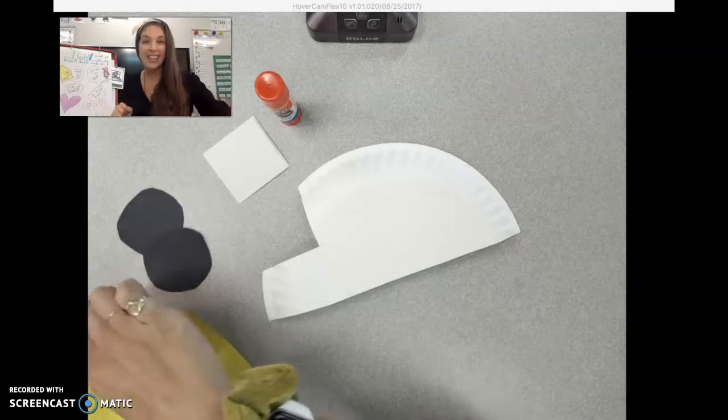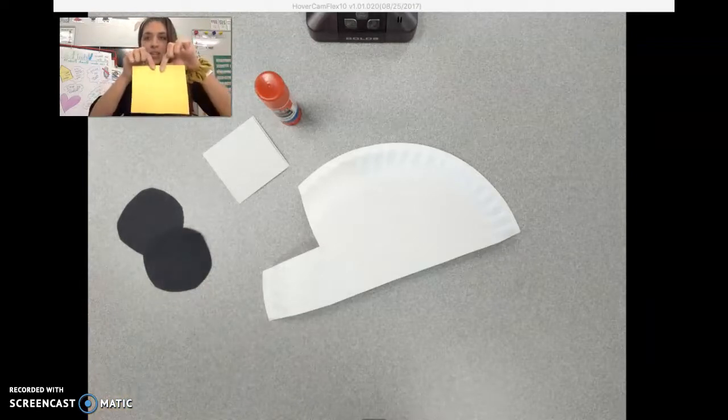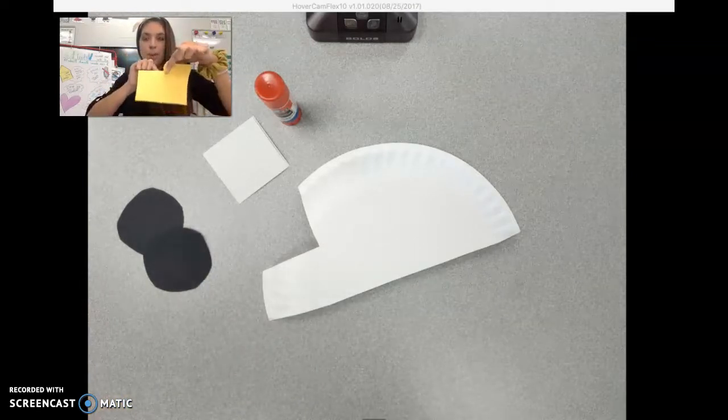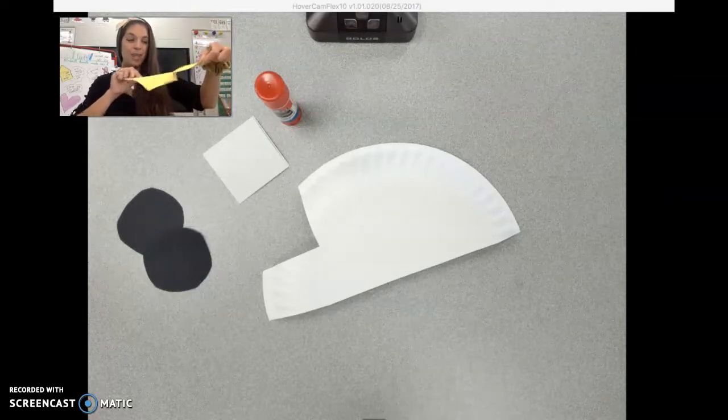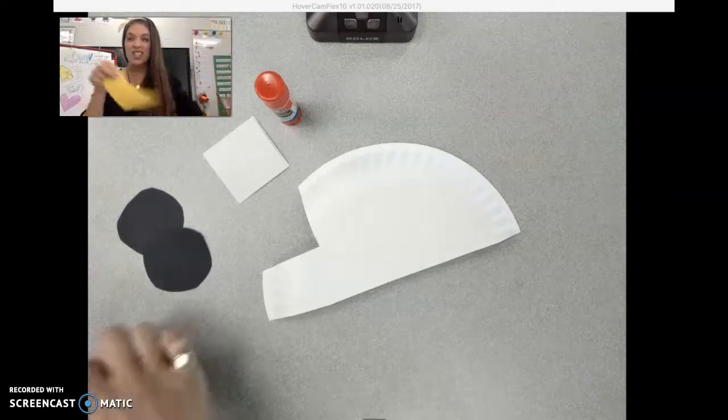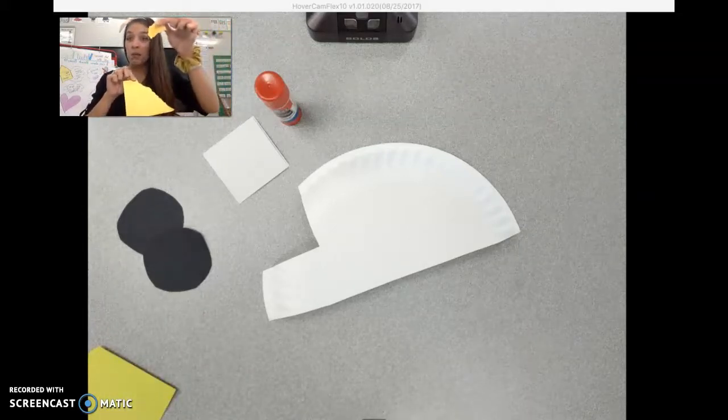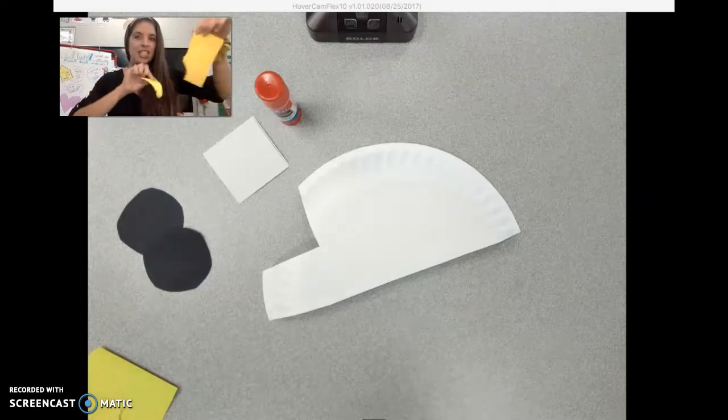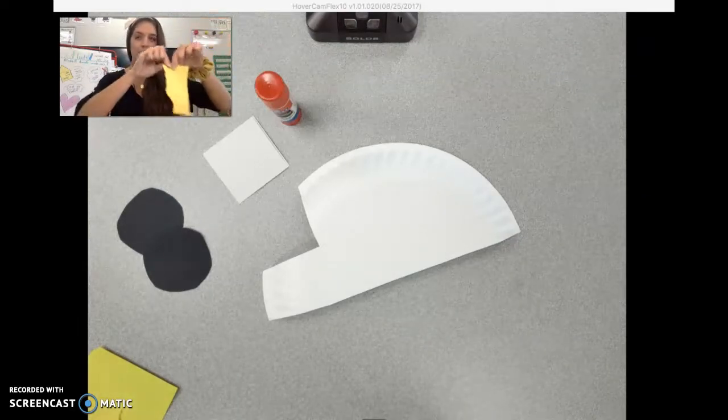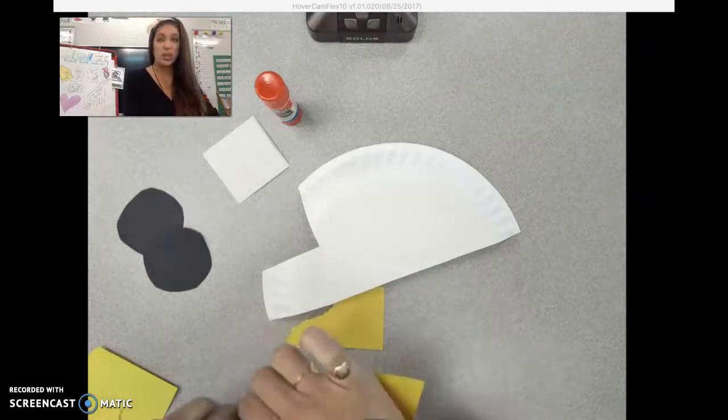So one is going to go towards you and one is going to go away from you when you rip. That will make it a little easier for you when you are ripping. So get your pincher fingers on your paper and you rip. See how one is going towards and one is going away? And all the rips look a little different, and that is okay. We are ripping our paper just like this with our pincher fingers.